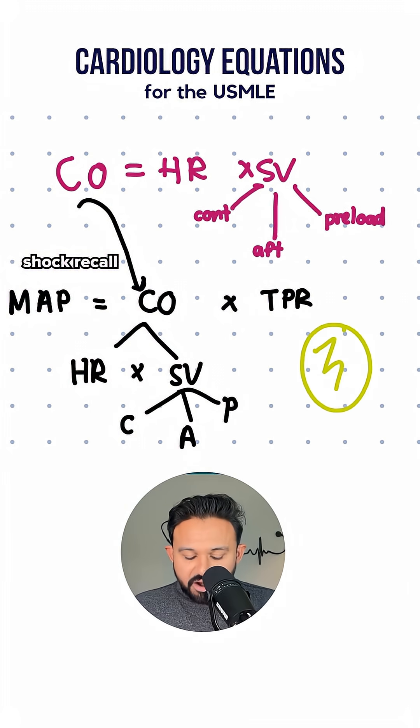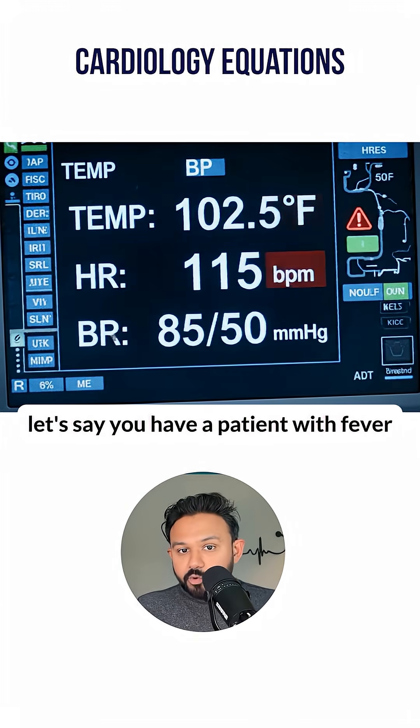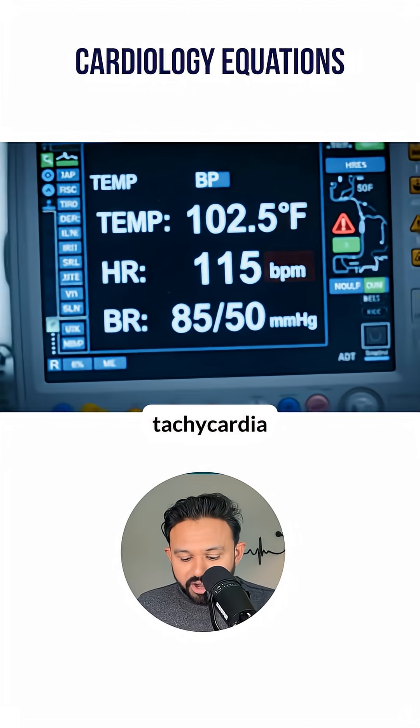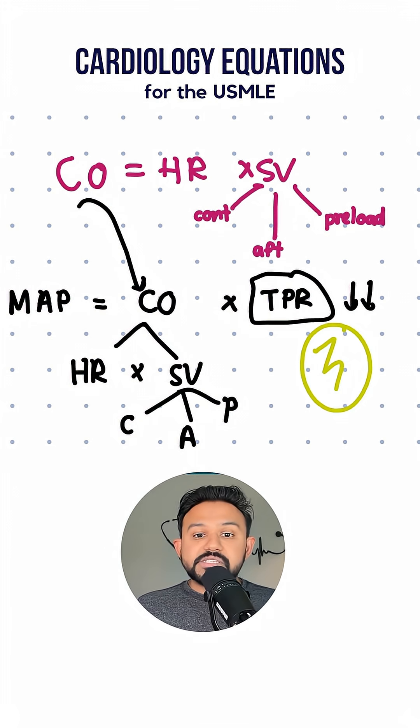What concept can we now integrate here? Shock. Recall, let's say you have a patient with fever, hypotension, tachycardia. Well, the patient is in septic shock. Their total peripheral resistance is low, and that is causing their blood pressure to be low.